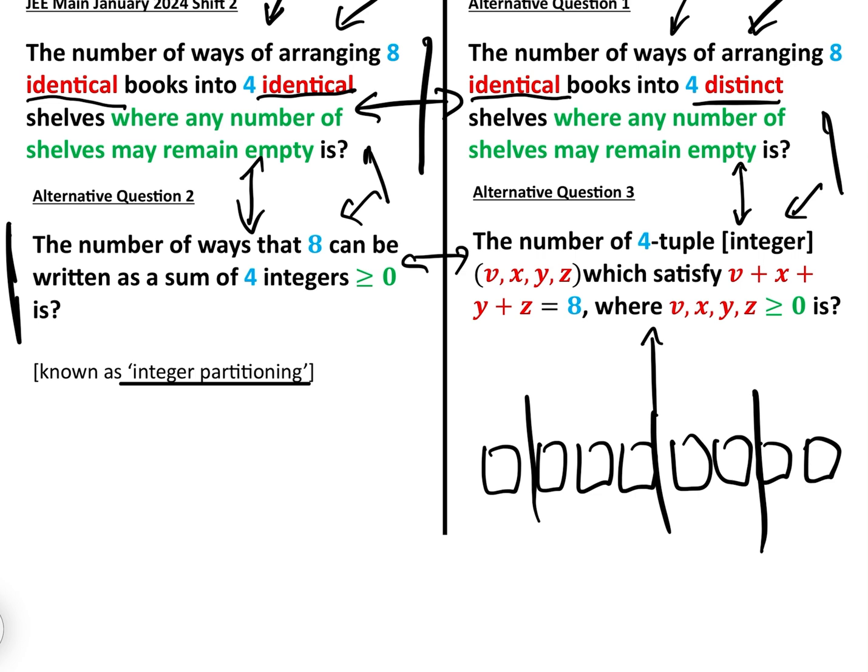And then basically, as we've discussed in previous videos, that will be n + m - 1 choose n - 1, which in this case will be 8 + 4 - 1 = 11C3, which equals 11 times 10 times 9 over 6, which equals 165.